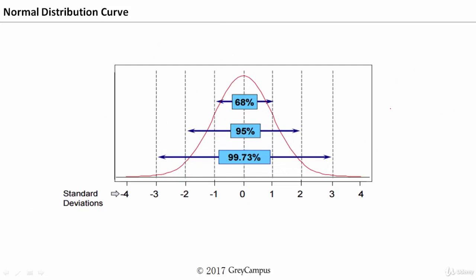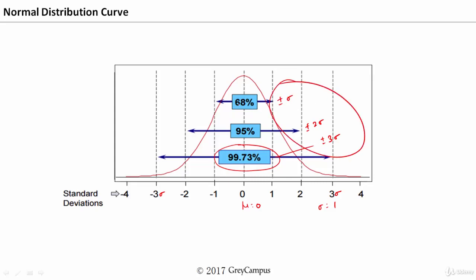Another important aspect: it is not exactly 100% — it is 99.73% of the data points lying between plus or minus 3 sigma. If we consider mu as 0 and sigma as 1: 99.73% of data lies between plus or minus 3 sigma, 95% of data points lie between plus or minus 2 sigma, and 68% of data points lie between plus or minus 1 sigma. This is a very important concept — whenever a population is normally distributed, these percentages will always hold.